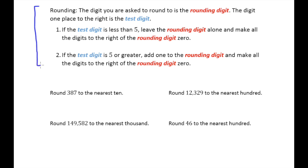So as I go through this rule for rounding, what I'm going to do is we're going to look at this first example of rounding 387 to the nearest ten. So first of all, the digit you are asked to round to is the rounding digit. The digit one place to the right is the test digit.